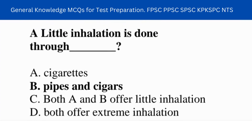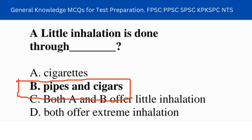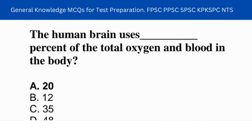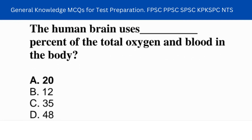Next question: inhalation is done through the nose and windpipe. Next question: the human brain uses what percentage of total oxygen and blood in the body?